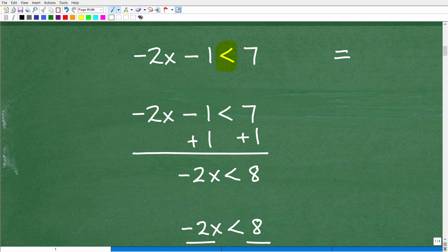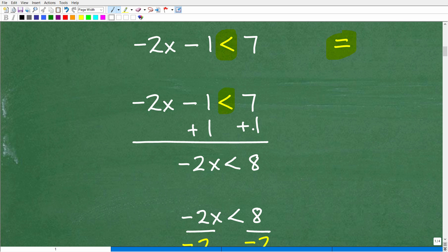All right. So with that being said, here is our inequality symbol. We're going to kind of think of it as an equal sign, more or less. So it's the same steps as the previous problem. I'm going to add 1 to both sides of the inequality. All right. So I'm adding down like so.